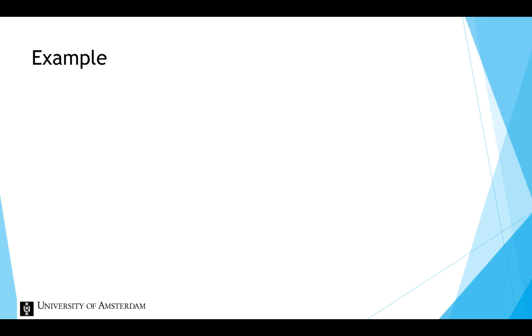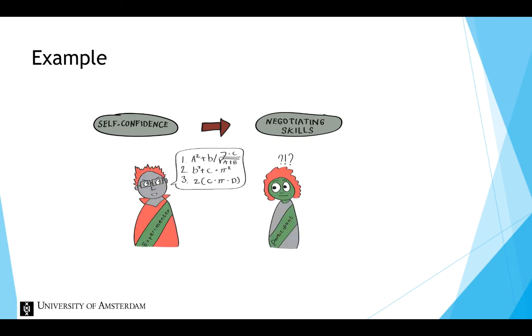Suppose we want to investigate the effect of low self-confidence on negotiating skills. Before the negotiation, participants are given extremely complicated instructions to make them confused. The instructions will be repeated, but still in a too complicated way, so that they still don't understand. This will lower their self-confidence.